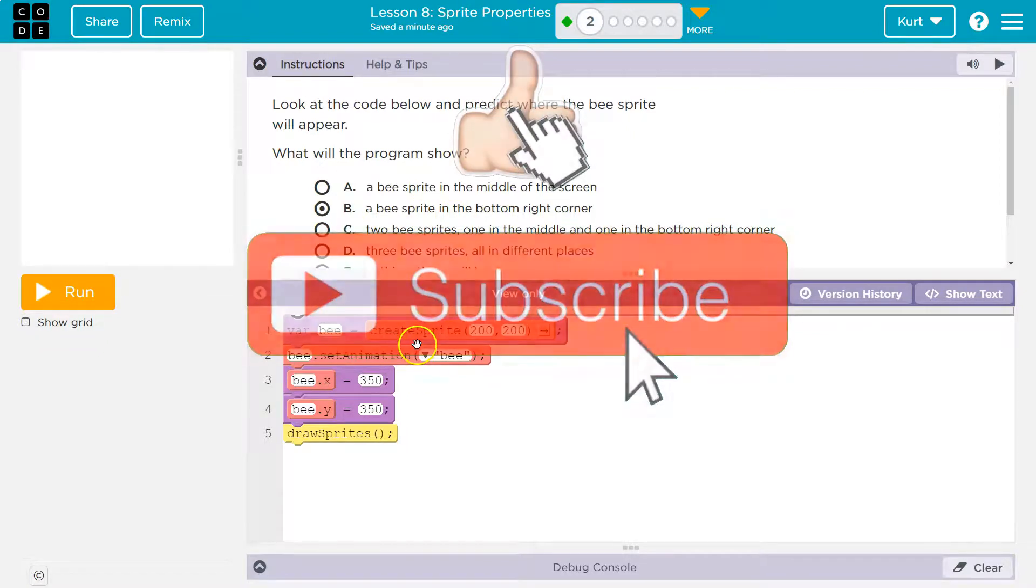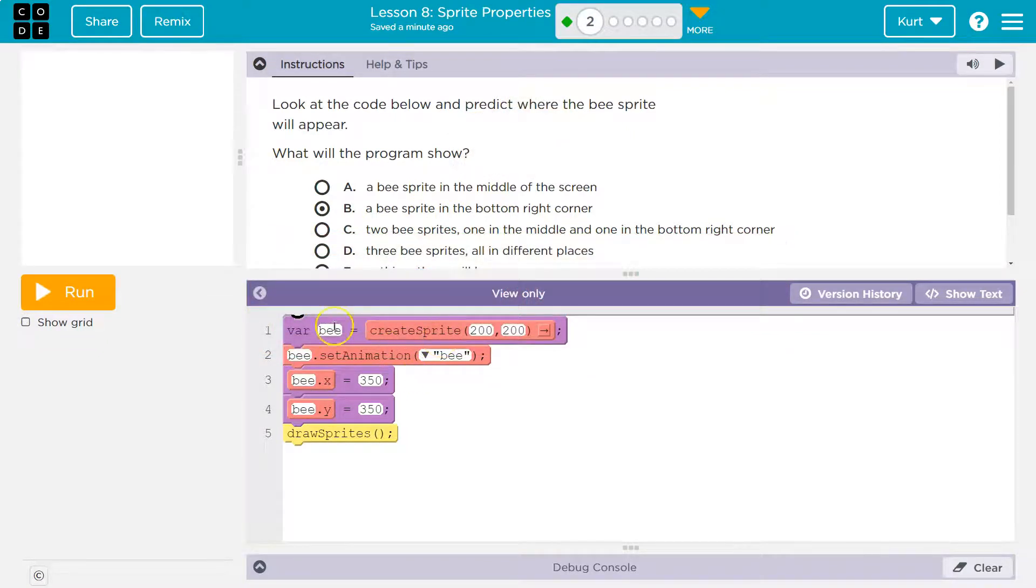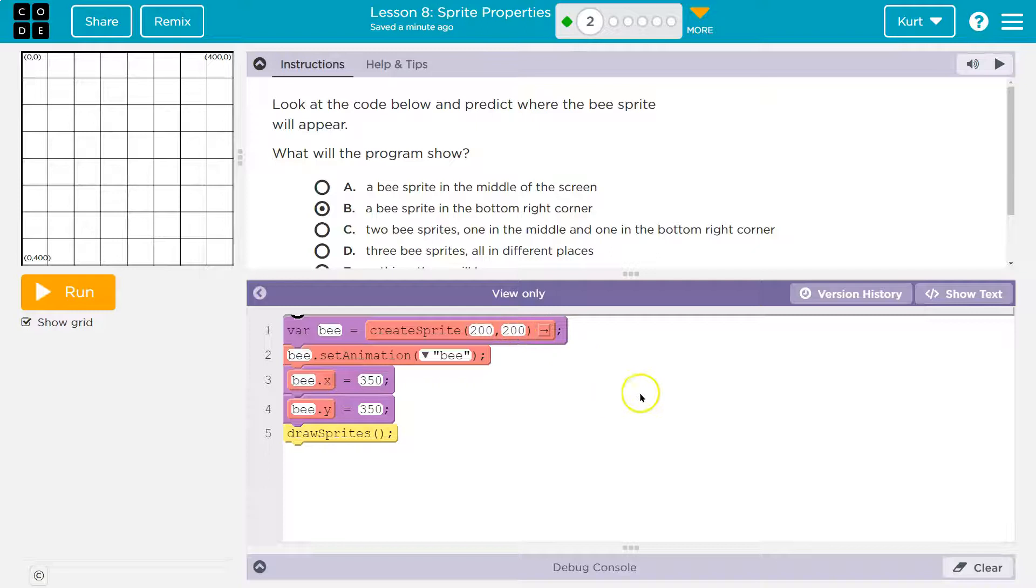So let's talk about the code and let's understand it. So this variable B is set equal to this thing called create sprite 200 200. So we're making a sprite and we're slapping it equal to B. Where's that sprite? 200 200.